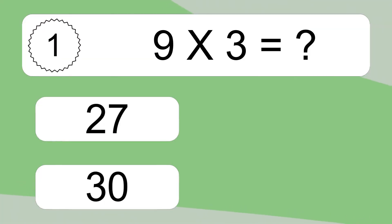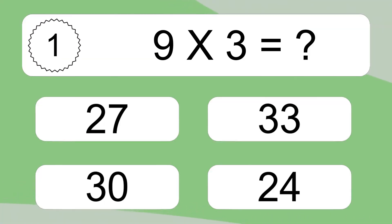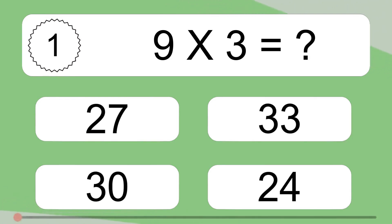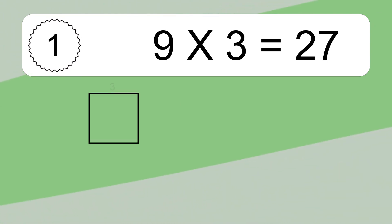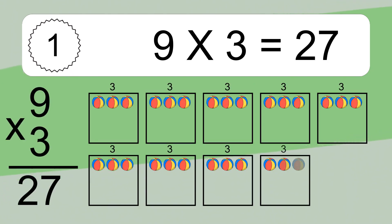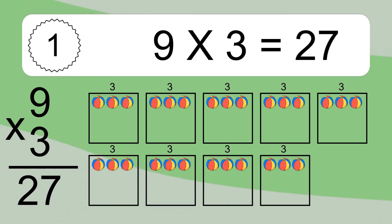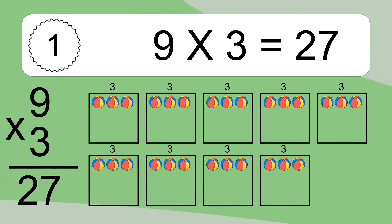9 times 3 equals what? 9 times 3 equals 27. We have 9 boxes, and each box has 3 colorful balls inside. If you count all the balls in all the boxes together, you will have 9 times 3 balls. This equals 27 balls.